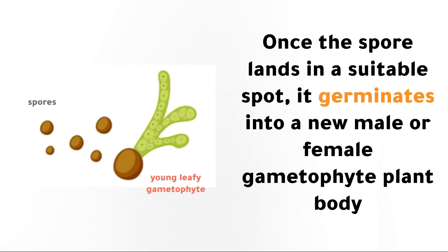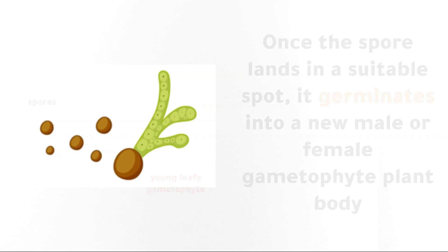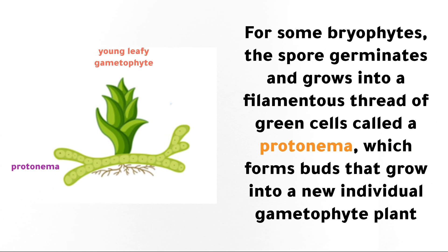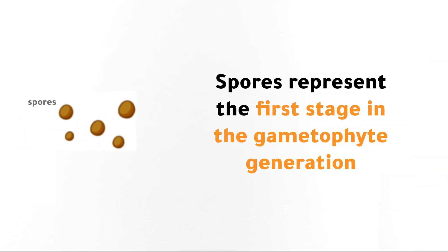Once the spore lands in a suitable spot, it germinates into a new male or female gametophyte plant body. For some bryophytes, the spore germinates and grows into a filamentous thread of green cells called a protonema, which forms buds that grow into a new individual gametophyte plant. Spores represent the first stage of the gametophyte generation.